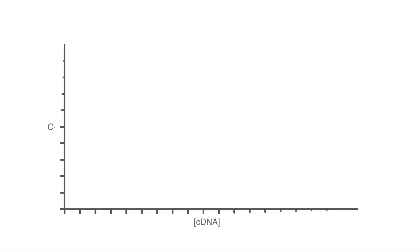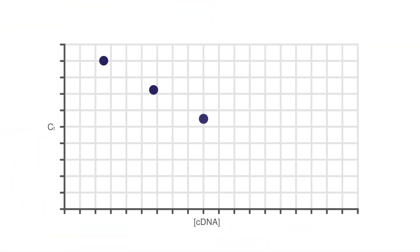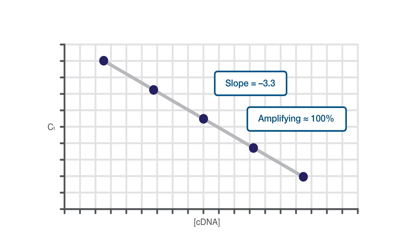Let's start with the basics. To measure the efficiency of an assay, you need to run a template dilution curve in real-time and look at the slope of the curve. That slope value, assuming you prepare the curve properly, tells you the efficiency. If the slope is negative 3.3, the assay is amplifying at or very near 100%, which is exactly what we want in a quantitative real-time PCR.